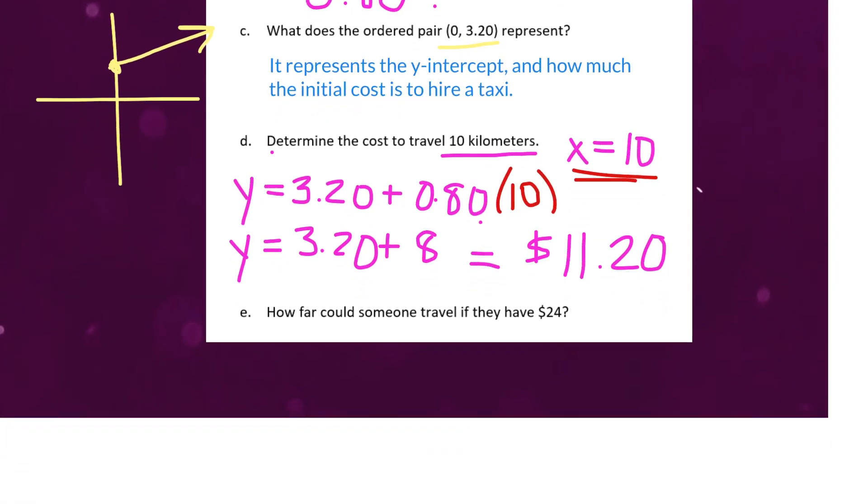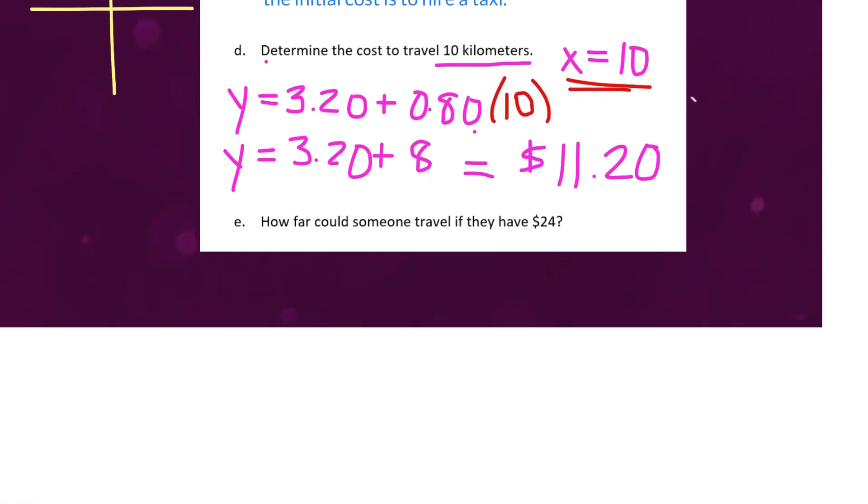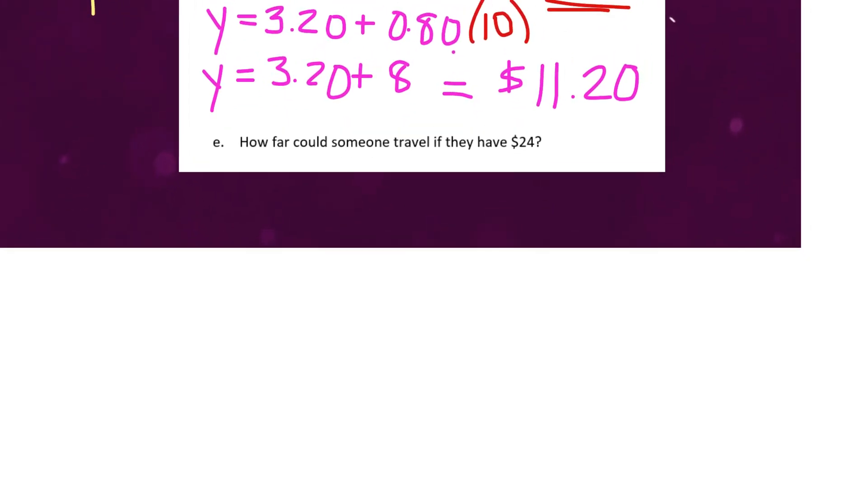Last question, and then we'll be done this video. It is, how far could someone travel if they have $24? Well, using the equation again to help us, this time we're being told the cost, not the number of kilometers. So, the cost is represented by our other variable, y. So, what I'm going to do is I'm going to rewrite the equation, but instead of y, I'm going to write 24. So, we're going to write 24 equals 3.20 plus 0.80x.